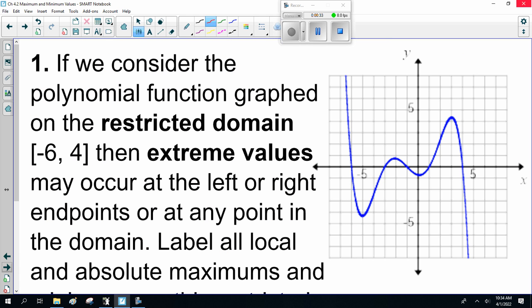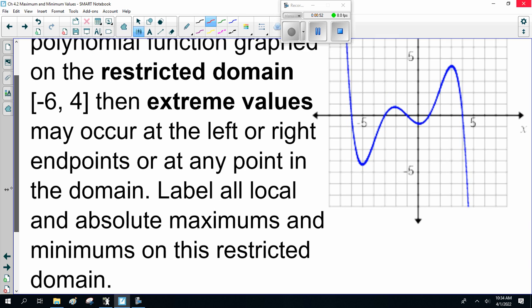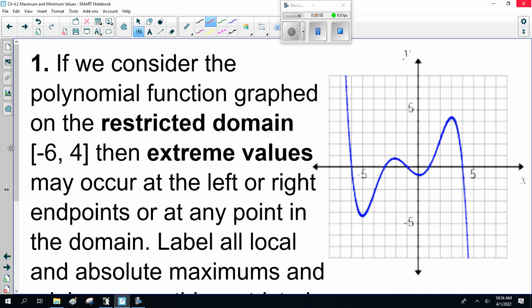If we consider the polynomial function graphed on the restricted domain [-6, 4], then extreme values may occur at the left or right endpoints or any point in the domain. Label all the local and absolute maximums and minimums on this restricted domain. So a lot to unpack here. Notice the restricted domain from x = -6 to x = 4. Here I'm being deceitful. This graph, the red part of the graph is what we're looking at, not the entire graph.